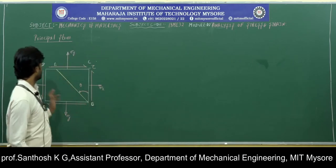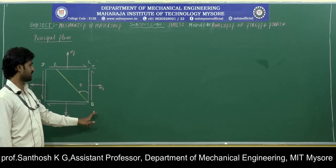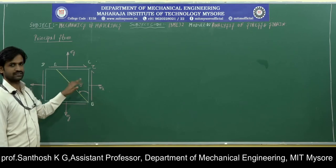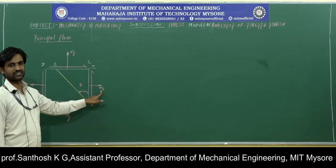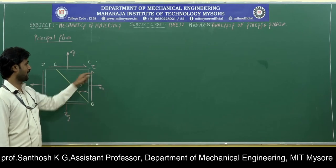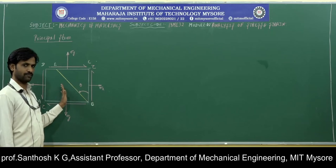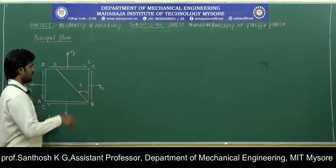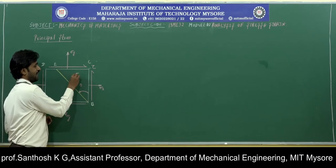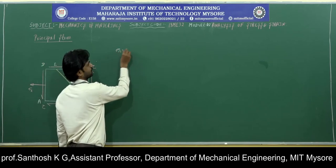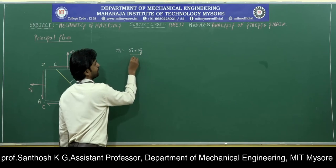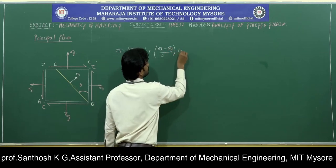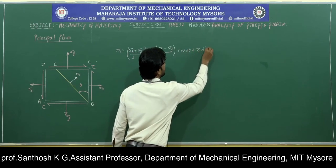We found that for a biaxial stress system with shear, this diagram represents the example. The body will be subjected to a normal stress sigma x, a normal stress sigma y, and a shear stress tau. If we consider a plane inclined with respect to the vertical at an angle theta, the normal stress acting will be: sigma n = (sigma x + sigma y)/2 + (sigma x - sigma y)/2 × cos(2θ) + tau × sin(2θ).